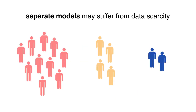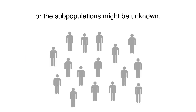Another option that accounts for differences between groups is to build separate models for each subpopulation. But this means that there might be insufficient data to train a separate model for each individual population. And in some cases, we might not even know what relevant subpopulations are present in the data.